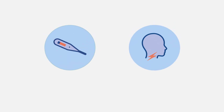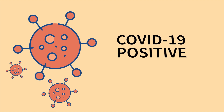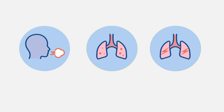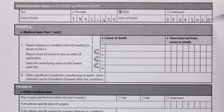A 45-year-old male had recently traveled overseas. He had a fever and sore throat for three days. The nasopharyngeal swab was positive for COVID-19. On the day of admission, he developed breathing difficulties and was diagnosed with pneumonia. After five days of hospitalization, he developed severe respiratory distress and died soon after. He had a 15-year history of type 2 diabetes and a 10-year history of hypertension. Let's complete his medical certificate of cause of death.